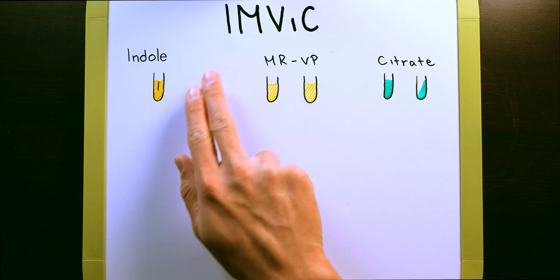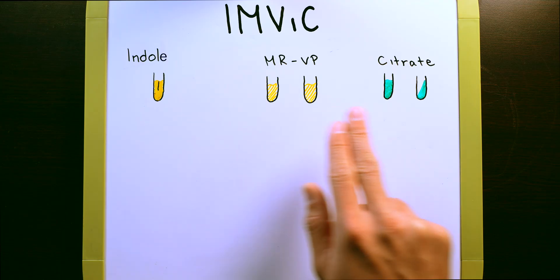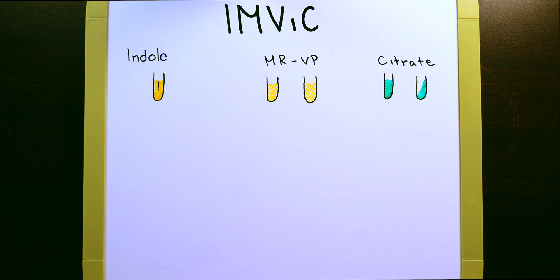The IMVIC test stands for indole, MR-VP, and citrate. It is used to make a basic profile of an unknown bacteria.